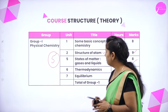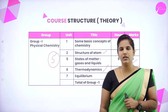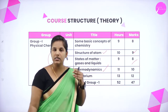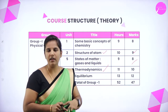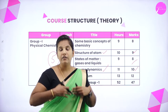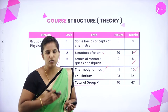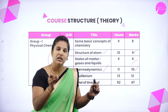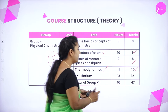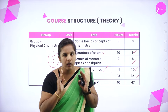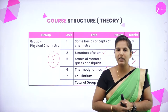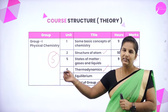The fourth chapter is Thermodynamics, where you study heat, heat change, and work done on the system; weightage is 10 marks. The fifth is Equilibrium, covering physical and chemical processes, concepts of acids, bases, and pH; it carries 12 marks. The total weightage from Group 1, physical chemistry, is 47 marks.